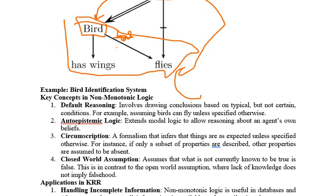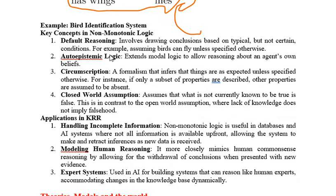The next concept is the closed world assumption, which assumes that what is not known to be true is false. We assumed 'birds can fly' was a true statement, but it is not entirely true. This happens due to lack of knowledge — most people assume birds can fly but don't know about penguins. So the closed world assumption is basically dependent on the lack of knowledge.